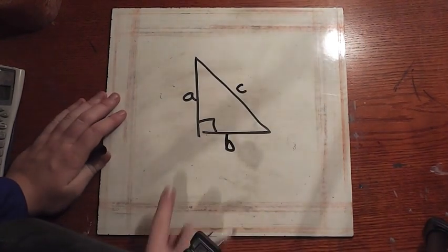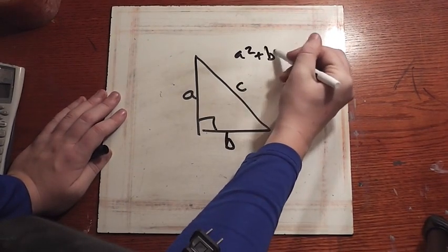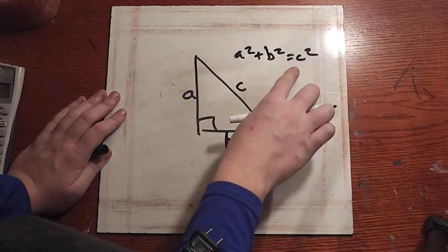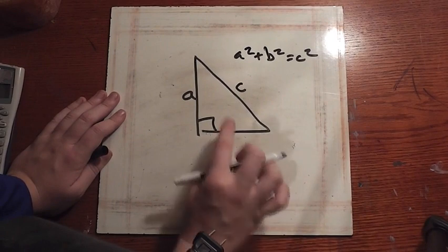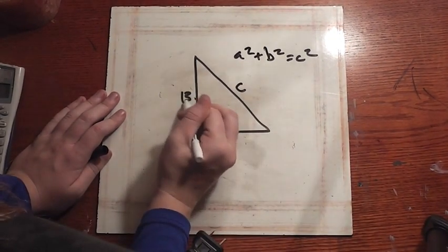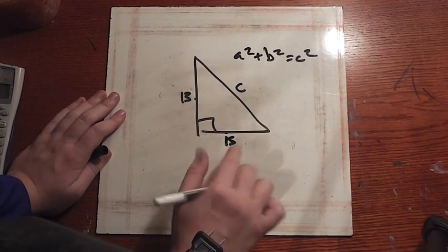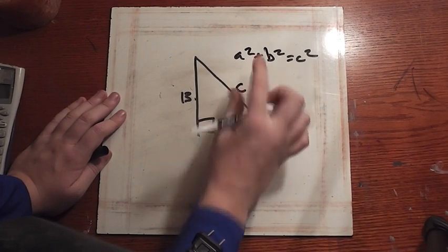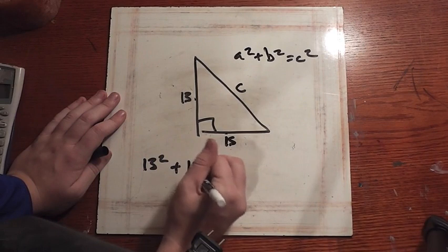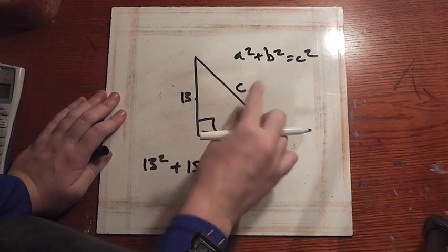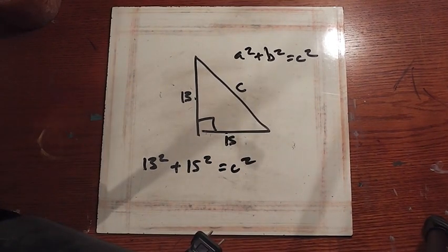The equation that you want for this is: A squared plus B squared equals C squared. Now that you have your equation, let's plug in our two sides. Let's do 13 and 15. So 13 squared plus 15 squared, and since we still don't know our hypotenuse, we will put C squared.